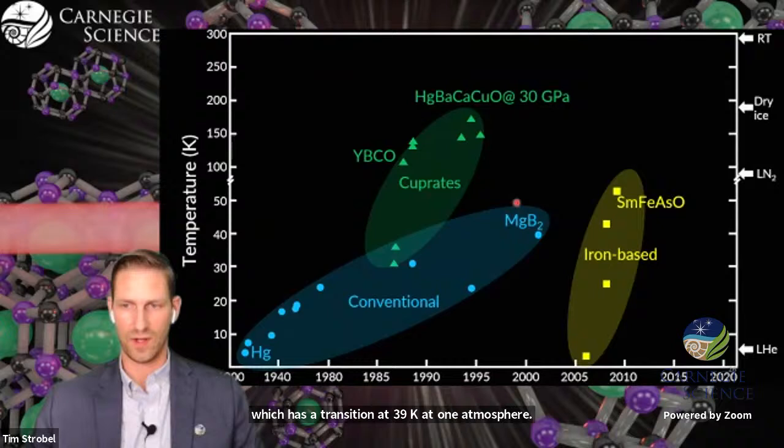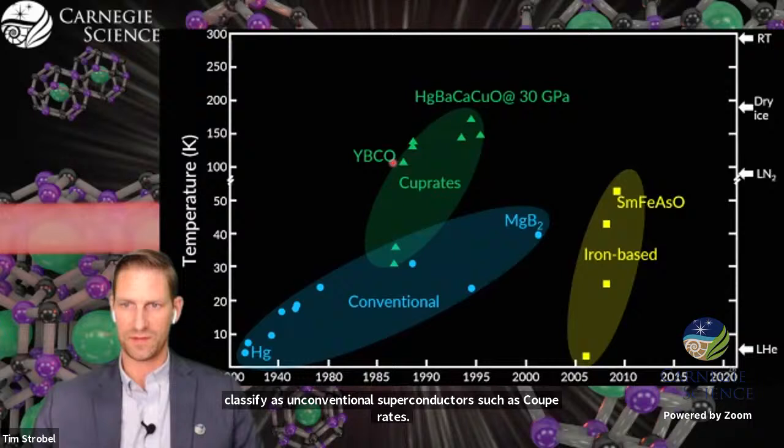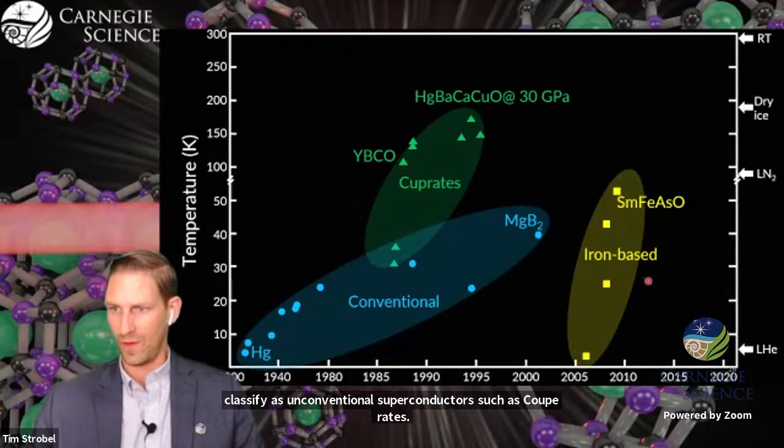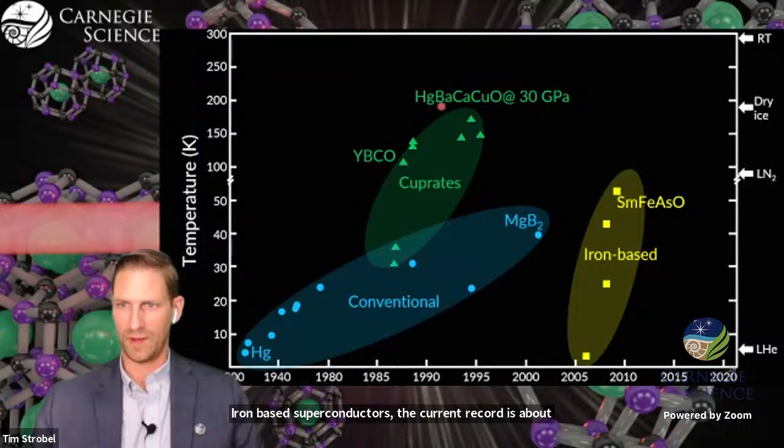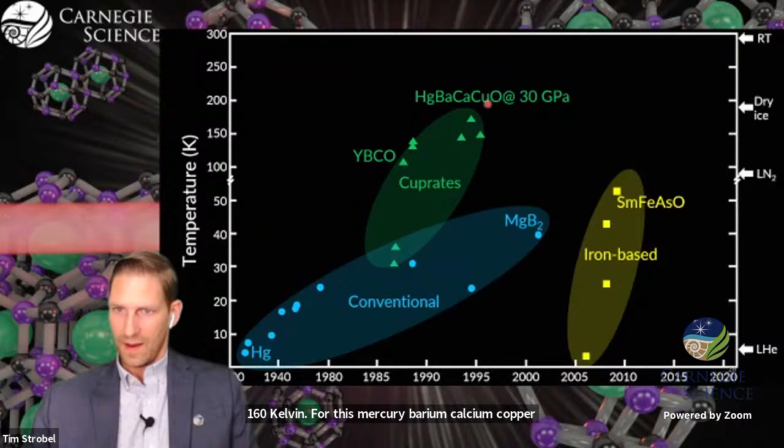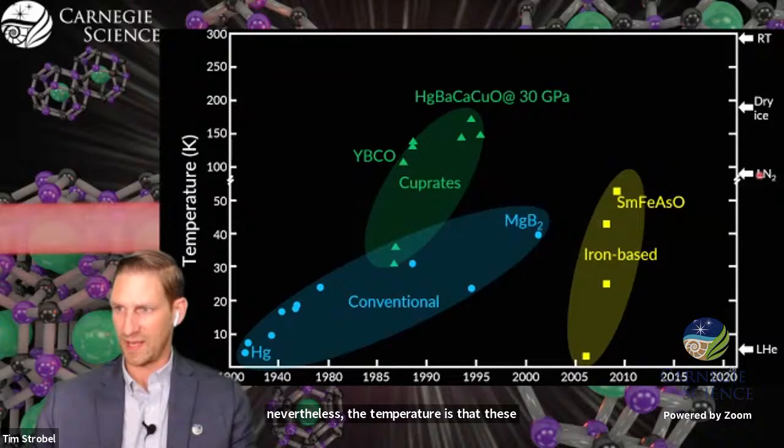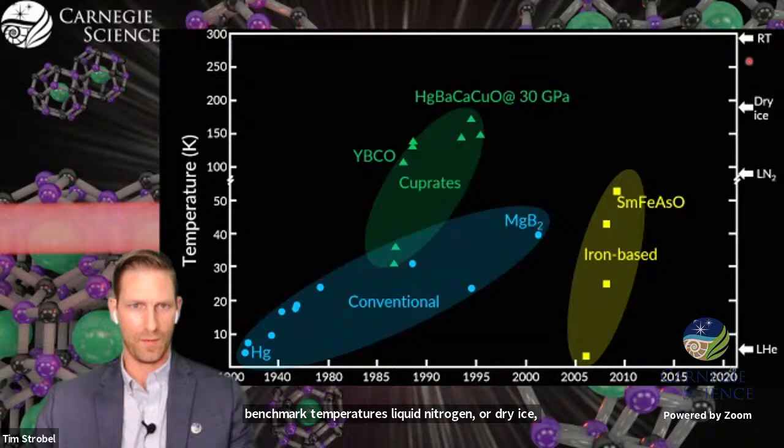There are other classes of materials that we would classify as unconventional superconductors, such as cuprates. YBCO is one of the most famous structures. Nevertheless, the temperatures that these are operating at are still very low. You can see some benchmark temperatures, liquid nitrogen or dry ice, compared to room temperature, meaning that for most applications, these are going to be impractical or very expensive.